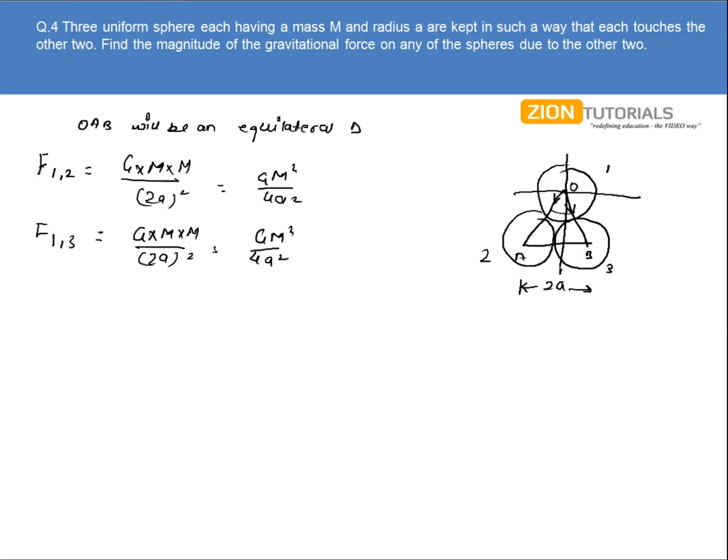So in this direction this angle is 30, this angle is 30, so I can write F12 cos in downward direction and also F13 cos in downward direction. F12 sin in this direction and F13 sin in this direction. Now what we notice is that F12 magnitude is equal to F13.